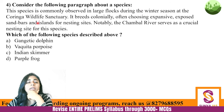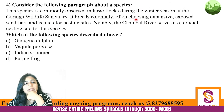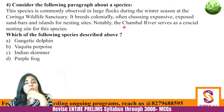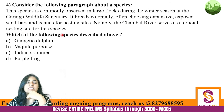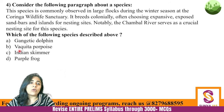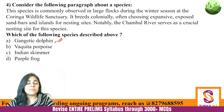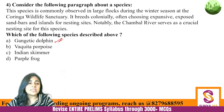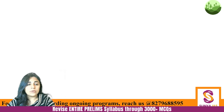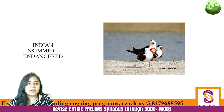Next: consider the following paragraph about a species — it is commonly observed in large flocks during winter at the Koringa Wildlife Sanctuary; it breeds colonially on exposed sandbars and islands; and the Chambal River serves as a crucial nesting site. Which species is described? Options are gangetic dolphin, vaquita porpoise, indian skimmer, and purple frog. The answer is the indian skimmer.